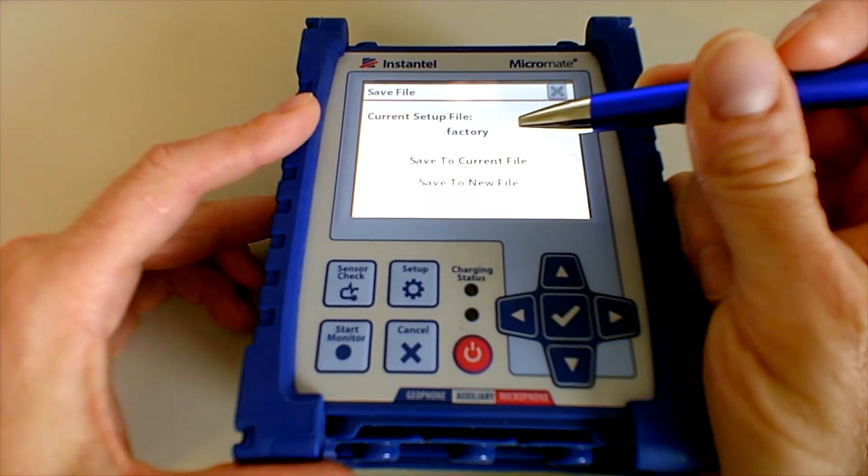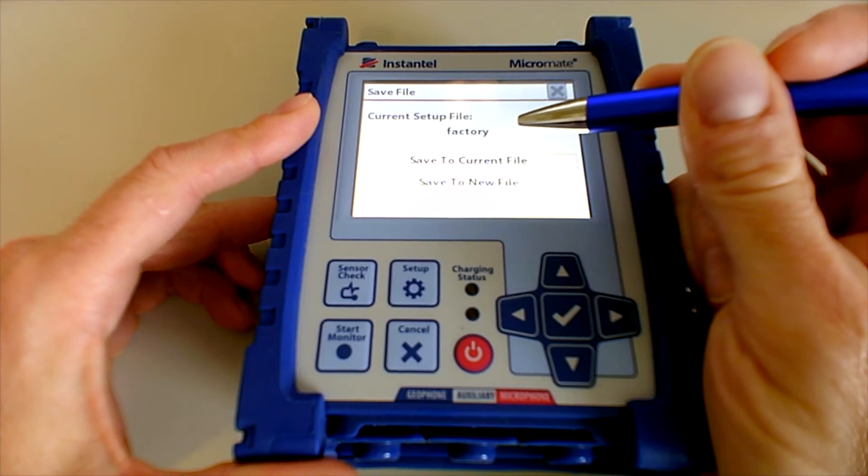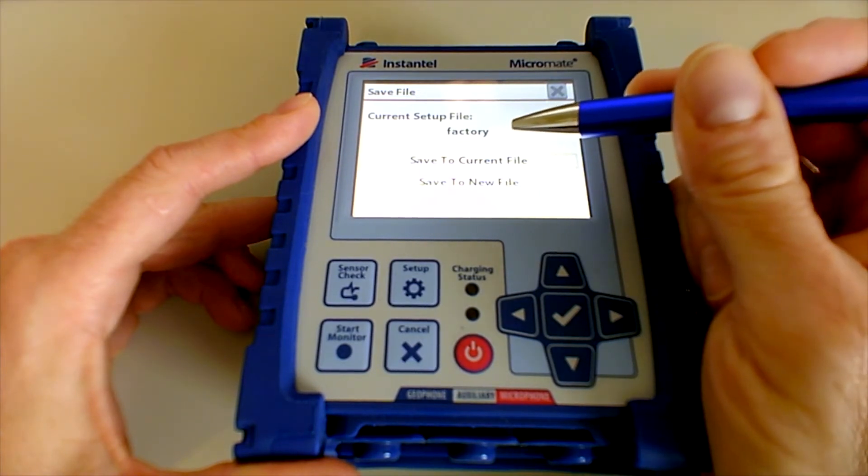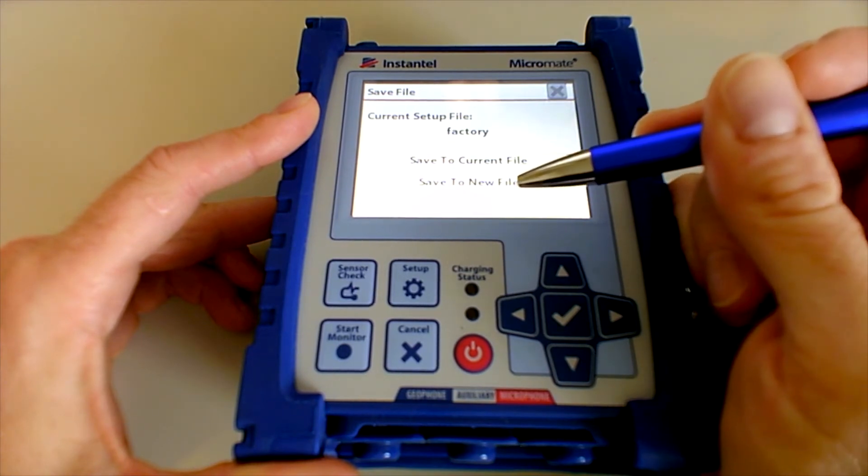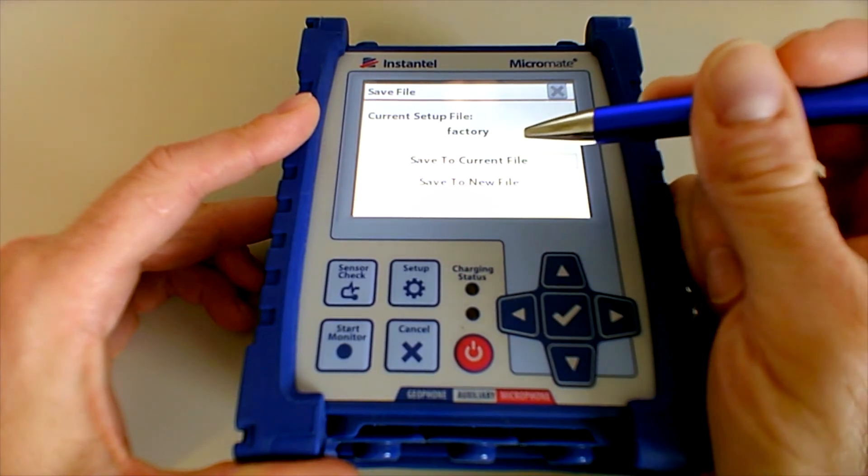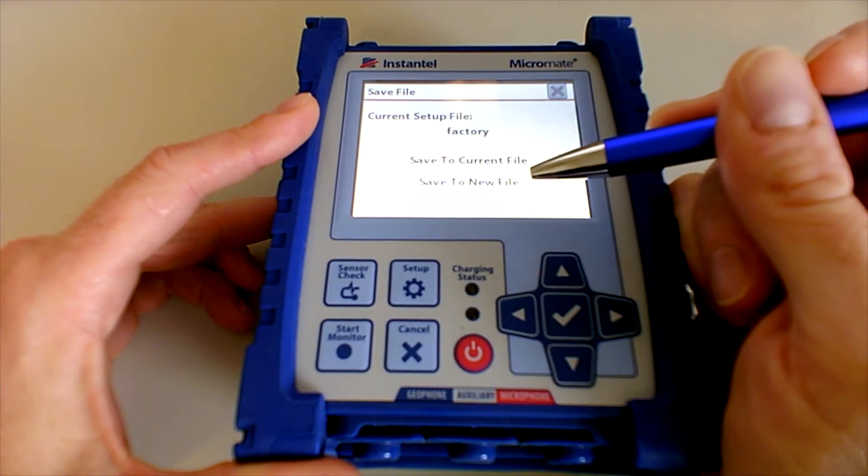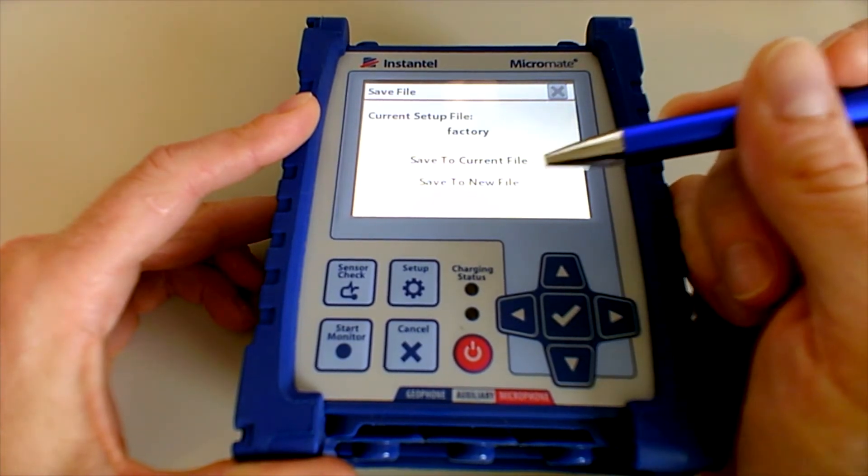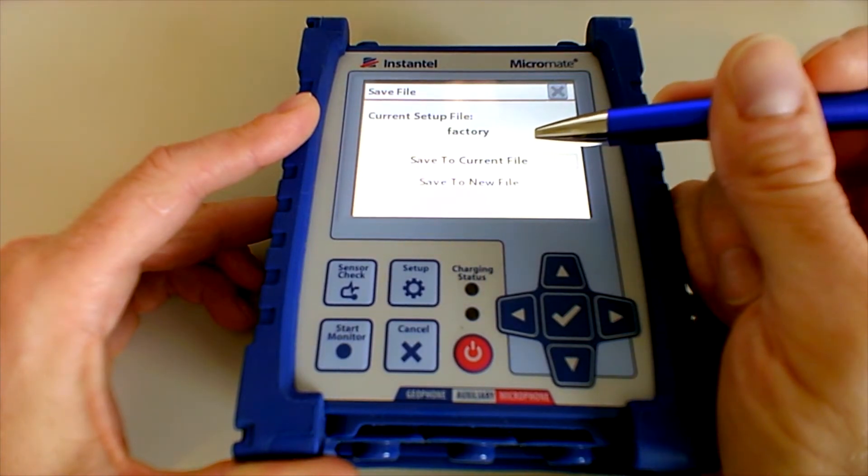Now, if you are using the Micromate scheduler, then you want to be sure to save to the file that you're already in. If you save to a new file, your scheduler will still be pointed to your original file, and therefore your modifications won't take effect. Now, if you're not using the scheduler, you can go ahead and save to a new file, and then you can call that file whatever you would like.